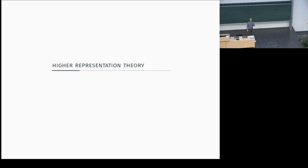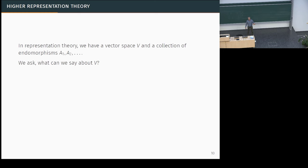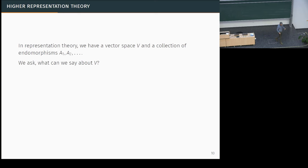This is a classical story, and now I want to explain how to see it from the perspective of higher representation theory. In representation theory, we have a vector space and a collection of endomorphisms of that vector space satisfying some relations, and we ask what we can say about the vector space.